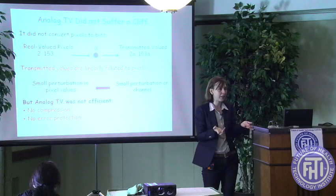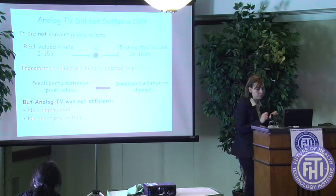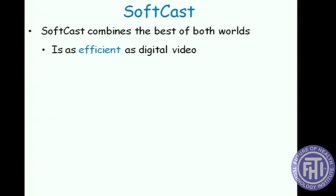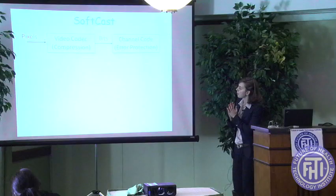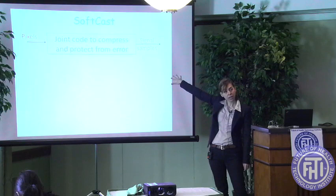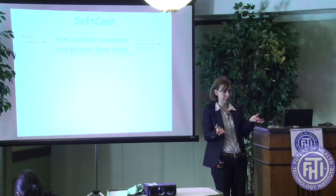What we are going to present is a system we call Softcast, which combines the best of both worlds. Like digital video, it is efficient; but like analog TV, it has no cliff effect. Softcast, instead of dividing video transmission into two components, has one component that both compresses the video and protects it from errors — one joint code for compression and protection from errors.